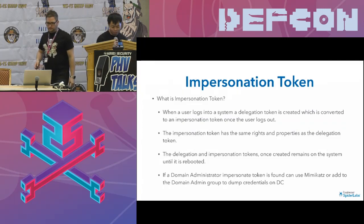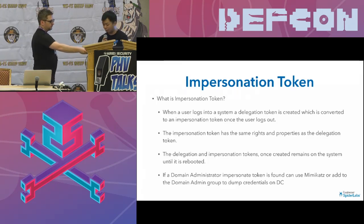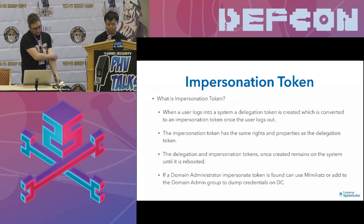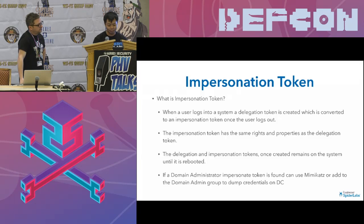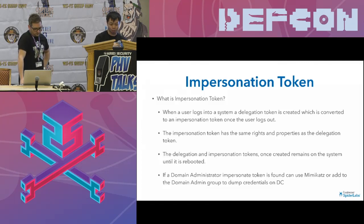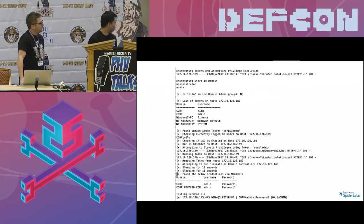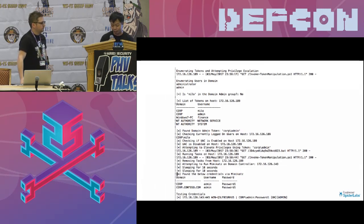Impersonation tokens: when a user logs into a system, a delegation token is created which is converted to an impersonation token even after the user logs out. This impersonation token has exactly the same rights as the delegation token. It doesn't get deleted and remains on the system until it's rebooted. So if a domain admin logs into a box and then an attacker gets to that box, they can use that token to execute domain admin commands on the domain controller, having the same privilege as the domain admin.